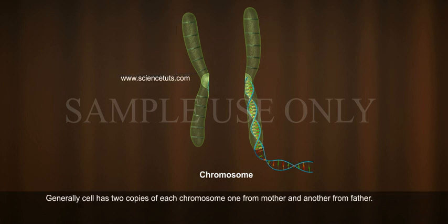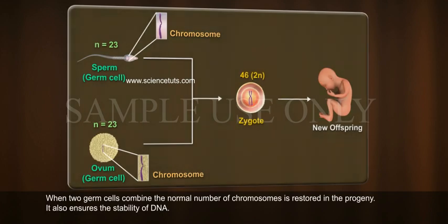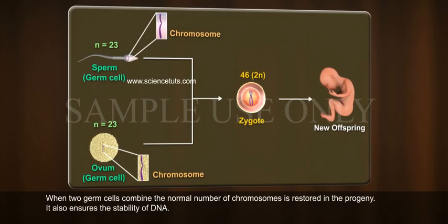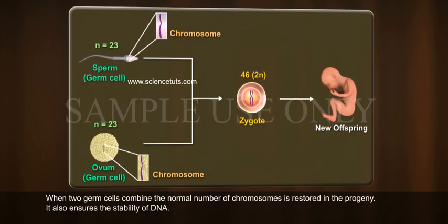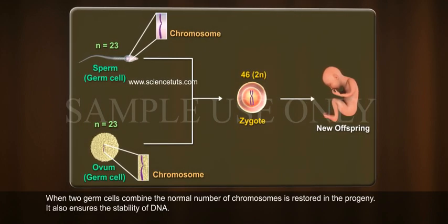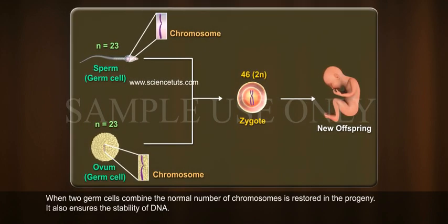A gene set consists of two separate independent pieces of a single long thread of DNA called a chromosome. Generally, a cell has two copies of each chromosome, one from mother and another from father. When two germ cells combine, the normal number of chromosomes is restored in the progeny. It also ensures the stability of DNA.